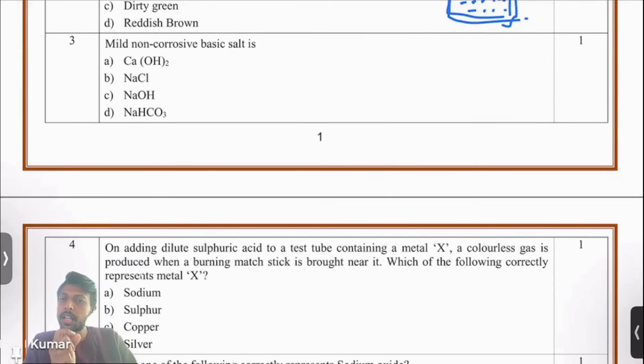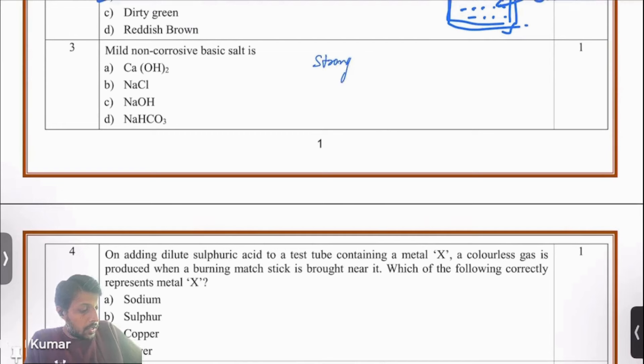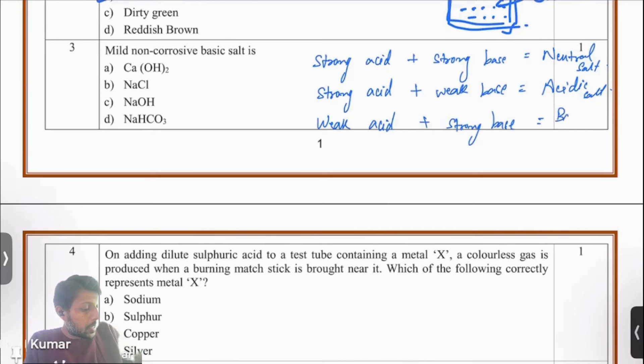Let's move on to the third one. Which of these four options is a mild non-corrosive basic salt? Here's a quick revision for you. How do we get basic salt? There are three kinds of salts: neutral salt, acidic salts, basic salts. Neutral salts - we get neutral salts when strong acid and strong base react. Acidic salt when a strong acid reacts with a weak base. Basic salt, a weak acid and a strong base.